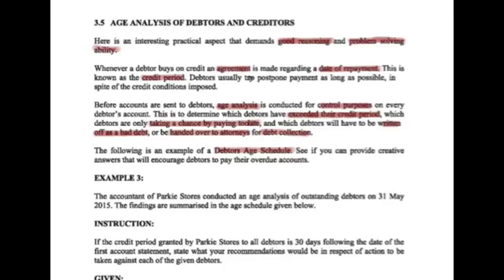Let's now look at age analysis of debtors and creditors. This is an interesting practical aspect that demands good reasoning and problem solving ability. When a debtor buys on credit, an agreement is made regarding the date of repayment. This is known as the credit period, set out by the business to the debtor. Debtors usually try to postpone payment as long as possible, in spite of the credit conditions imposed, and they had to sign a contract acknowledging the credit period and conditions.